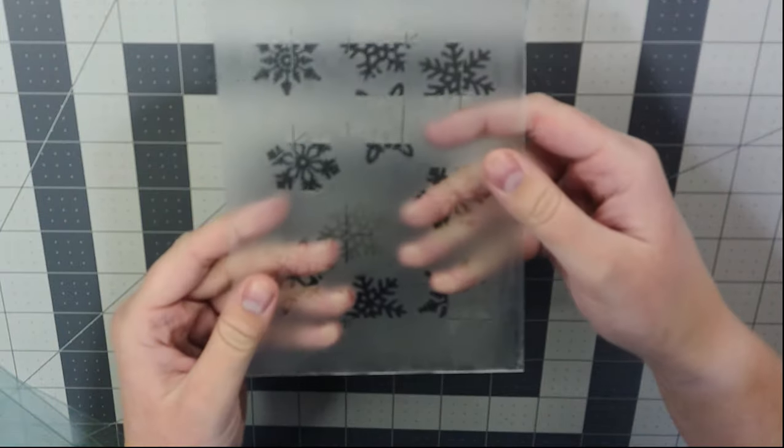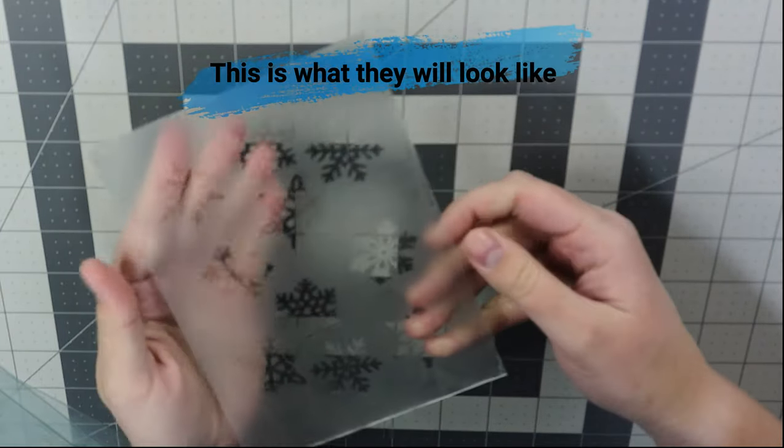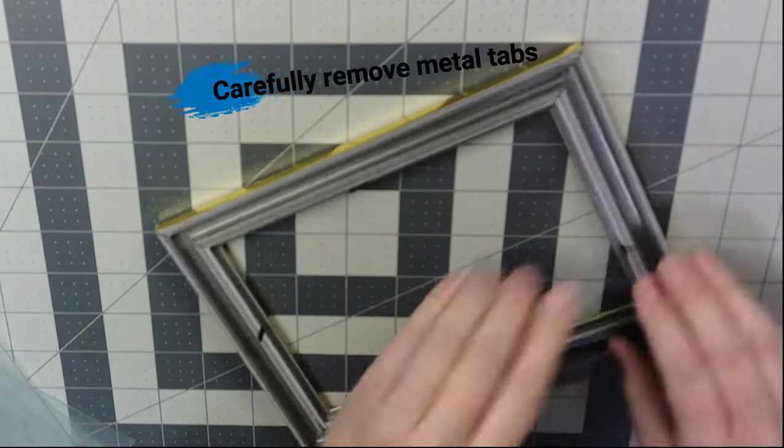When all four glass pieces are done, they will look something like this. You can see they are mostly frosted, but where the snowflakes were, they are still crystal clear.